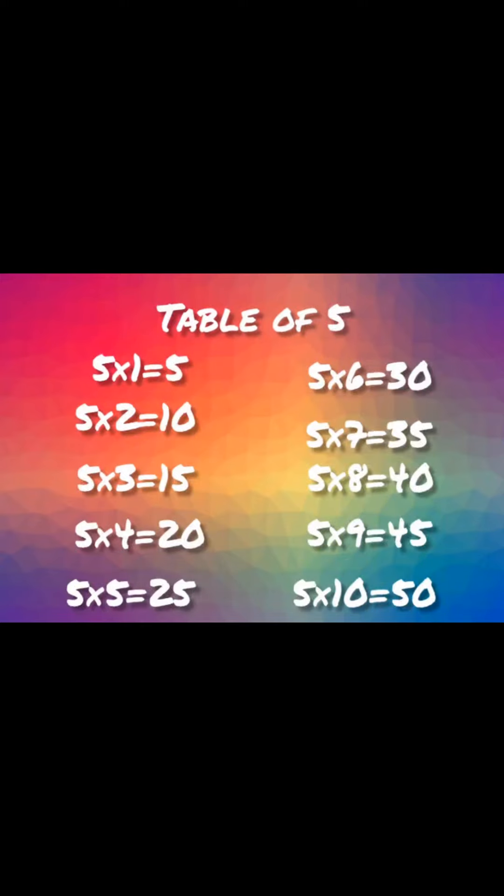Table of five. Five ones are five. Five twos are ten. Five threes are fifteen. Five fours are twenty. Five fives are twenty-five.